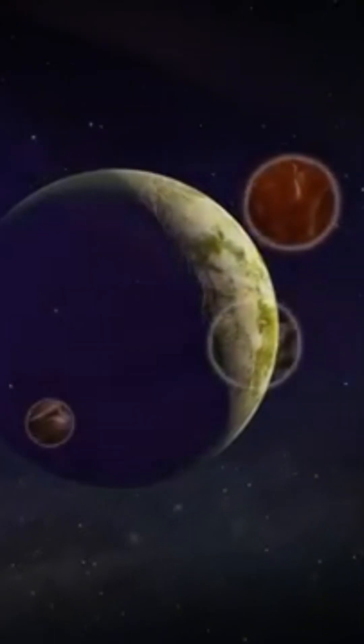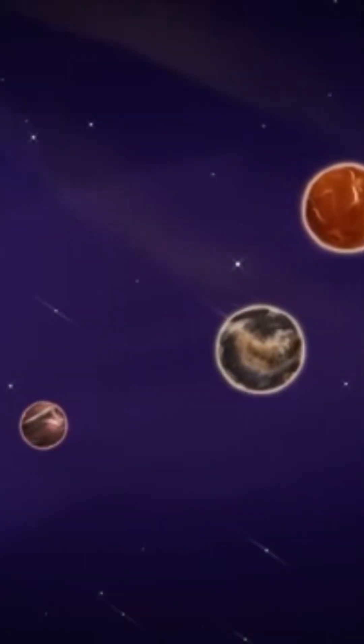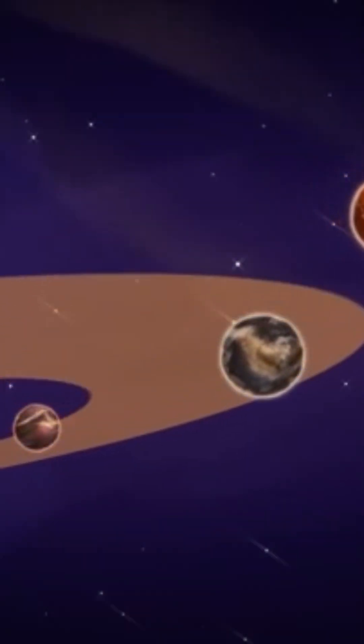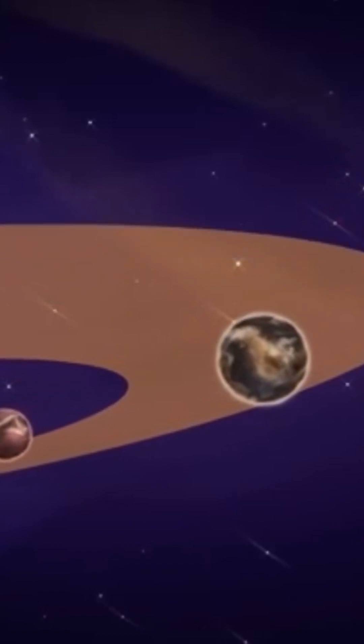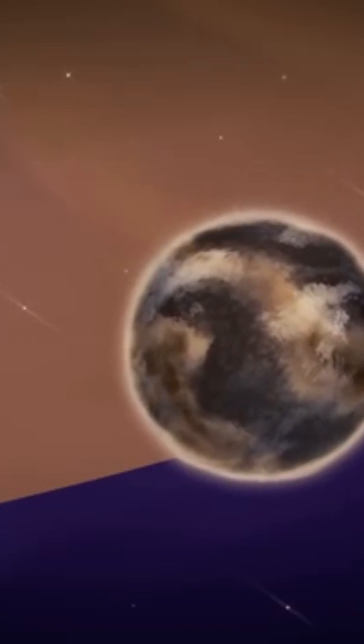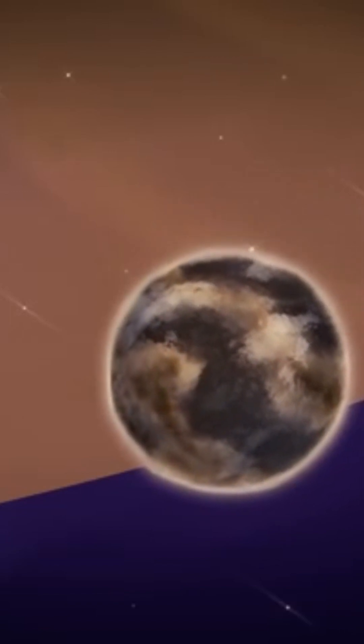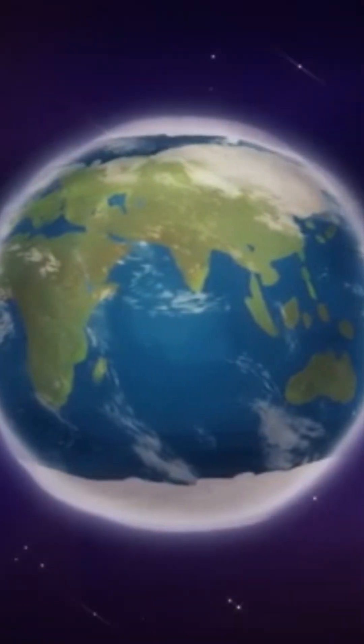First of all, our planet is located in the habitable zone of its star, the Sun. This means it's neither too close nor too far away. It therefore receives just the right amount of energy from the Sun to maintain ideal temperature conditions for water to remain liquid.